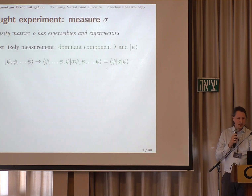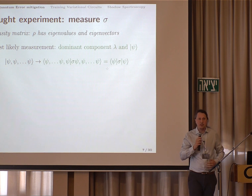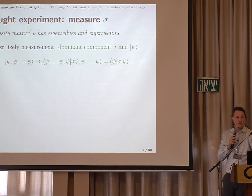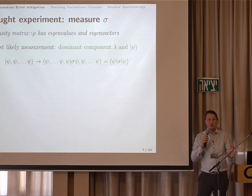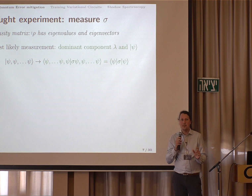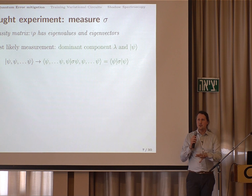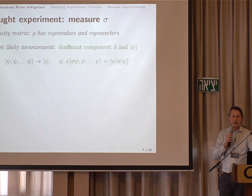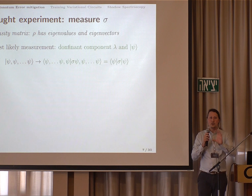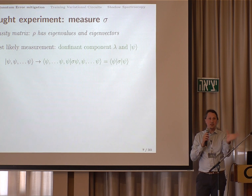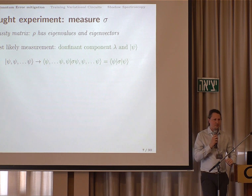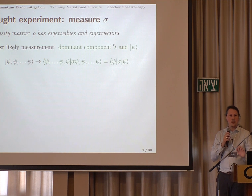Rho is the noisy output state that comes out from each quantum computer. The idea is that we entangle these copies and thereby measure an observable sigma with an exponentially suppressed error rate, where exponential is in the number of copies. To explain why it works: from a noisy quantum computer, the state that comes out is a density matrix rho. Since it's a density matrix, we know it has eigenvalues and eigenvectors — the eigenvalues are probabilities that a particular state happens, and the eigenvectors are the pure states corresponding to those probabilities.